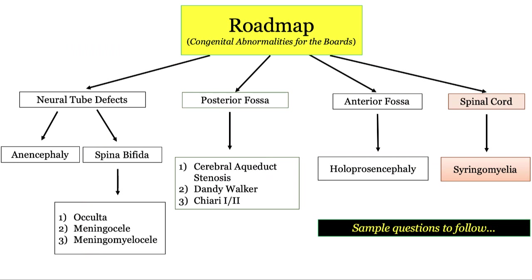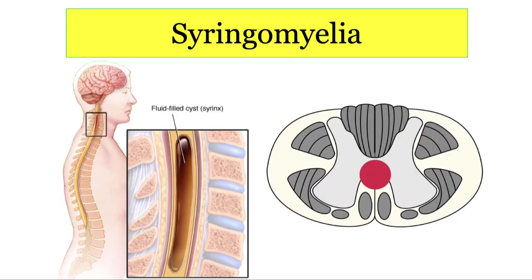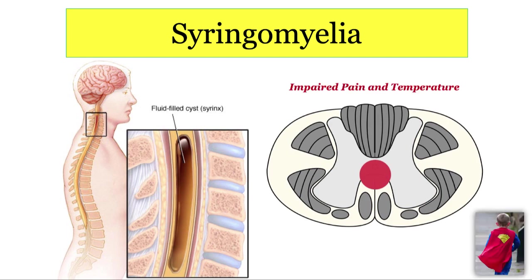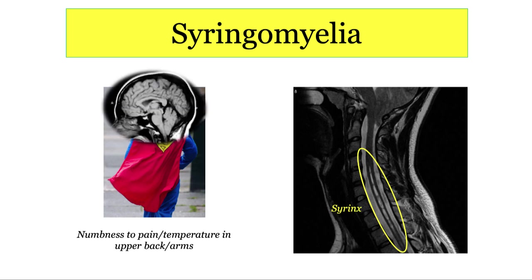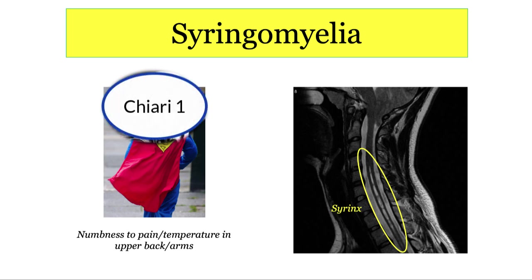We'll finish with syringomyelia. A syrinx — essentially a cyst — forms right in the middle of the cervical or thoracic spinal cord. It knocks out the anterior white commissure where the pain and temperature fibers cross, leaving you with loss of pain and temperature sensation with sparing of fine touch and vibration in a cape-like distribution. If the syrinx is large enough, some arm weakness may be noted. Syringomyelia may occur on a congenital basis or secondary to trauma or surgery. The NBME will tell you someone has numbness to pain and temperature in their bilateral upper back and arms only, plus or minus upper extremity weakness, and give you a subtle MRI showing a streak of white in the middle of the spinal cord. The associated congenital abnormality is Chiari 1 — remember, the 1 fits inside the syrinx.